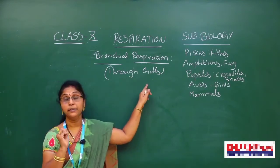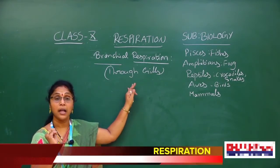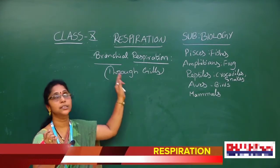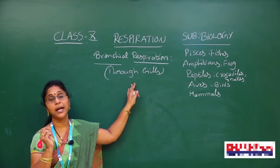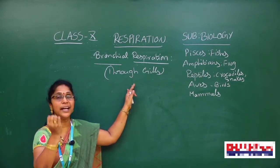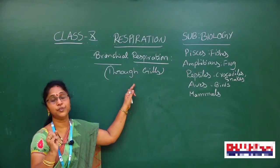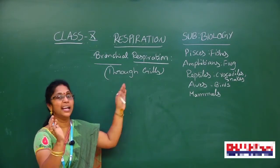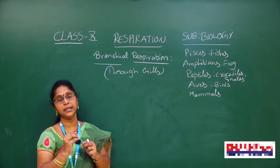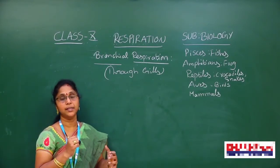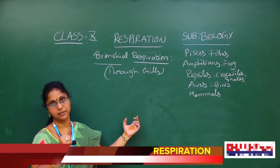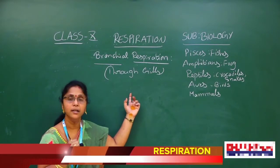Examples of bronchial respiration include fishes and the tadpole of frogs. The larva of a frog is called a tadpole. In the tadpole stage, frogs resemble fish and live in water, respiring through gills. When they go to the adult stage, respiration occurs through skin or lungs. These are the examples of bronchial respiration.